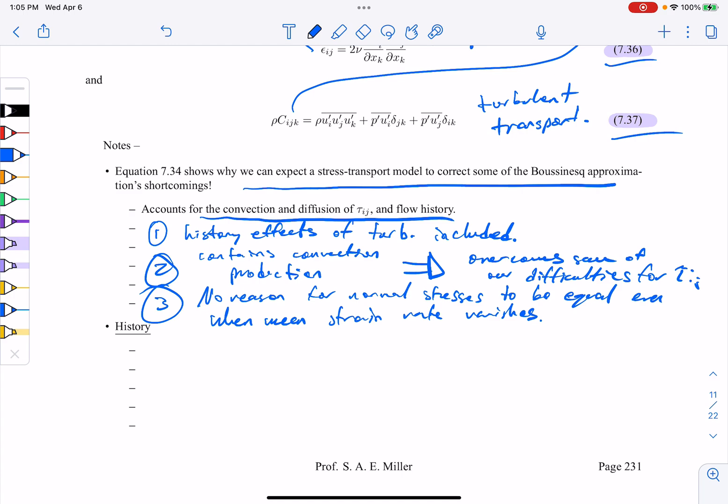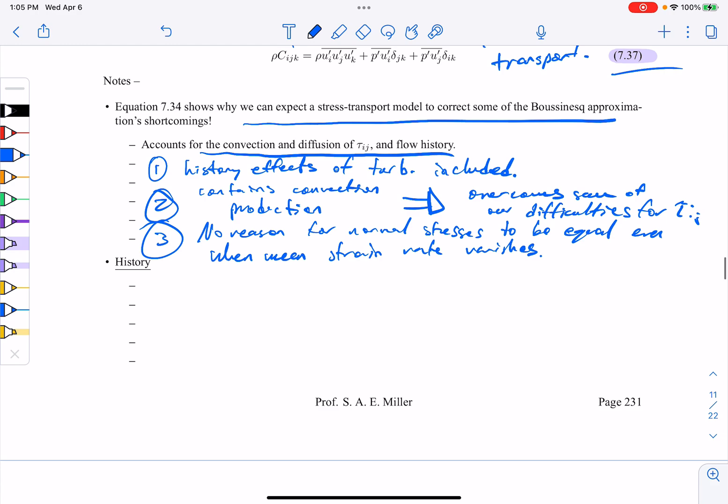Before we get into the closure of these three terms, let's just talk about the history of their closure. The first type of closures were actually put forward by Chow, 1945, which is the end of World War II, and Rhoda, 1951. They both proposed closures for these three particular terms, and we use a lot of their work still today, but they didn't carry out any numerical predictions.